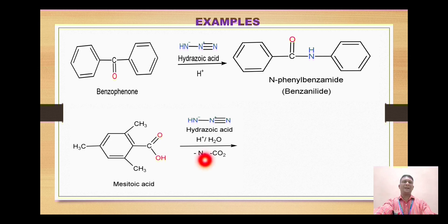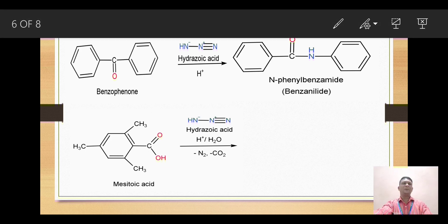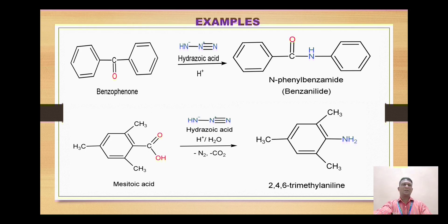The second example: mesitoic acid, which is 2,4,6-trimethylbenzoic acid, when reacted with hydrazoic acid results in removal of nitrogen gas and carbon dioxide, and attachment of the amino group (NH2) onto the carbon that was previously holding the COOH group. This gives the formation of 2,4,6-trimethylaniline. Please look at the examples carefully and observe what products are formed.